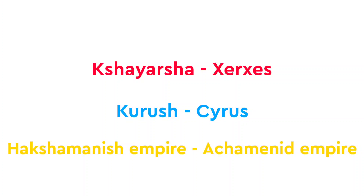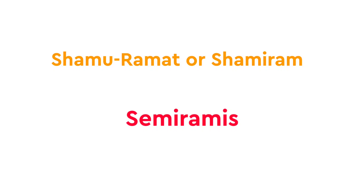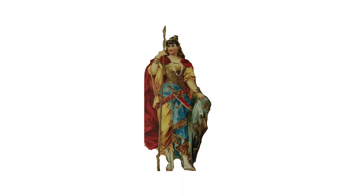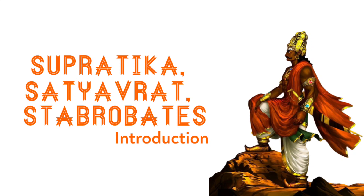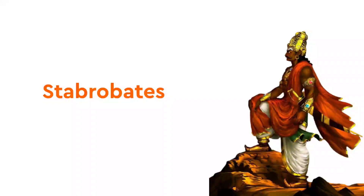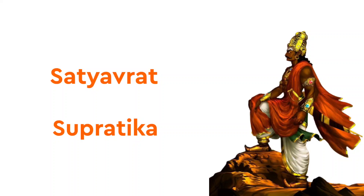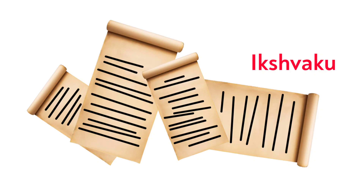Semiramis is actually Shamuramat or Shamiram. Her husband, the emperor, was dead and their son was too small, so she became the regent of the empire. Stabrobates, as mentioned by the Greeks, was the king whom Semiramis fought in India. Stabrobates is a Hellenized name; the Indian name is probably Satyavarat or Supratik. He was the king of the Ikshuaku dynasty. The Puranas mention a king Supratik who ruled nine generations before king Prasenjit from 600 BCE, so Supratik is likely to be the one who fought her.